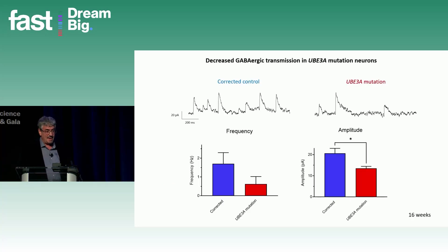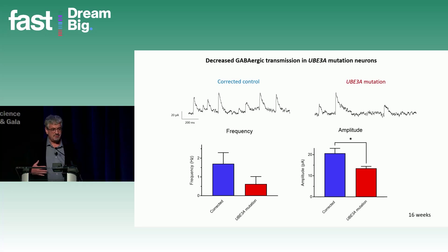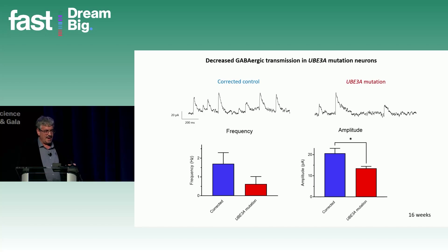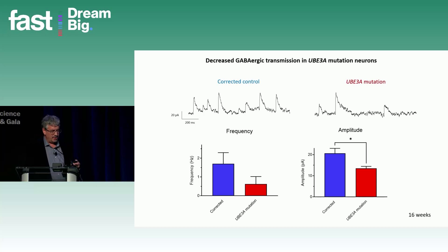Another important aspect is synaptic transmission, particularly GABAergic inhibitory transmission, because if that's disrupted it can cause motor problems, it can result in seizures, and it does a lot of things to neuronal function. What we find is that just the loss of UBE3A alone is enough to cause a decrease in GABAergic transmission. Those sweeps are actual GABAergic synaptic currents recorded from individual neurons, and we see a decrease in both the frequency and the amplitude of this GABA-mediated transmission in UBE3A neurons.